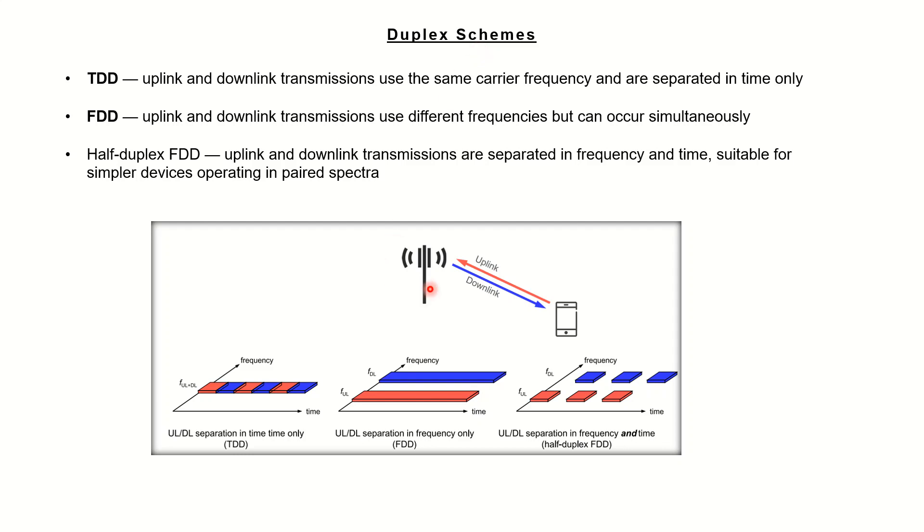If we have a communication between the base station and the user, there is an uplink communication as well as a downlink communication. From the user to the base station it's the uplink communication, and from the base station to the user it is a downlink communication.